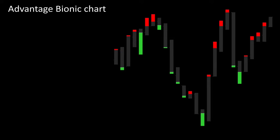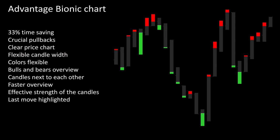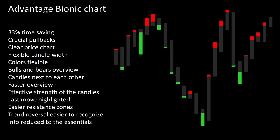Let's briefly summarize the advantages of the bionic candle again. This saves you 33% in time; the decisive pullbacks are highlighted; we have a clear price chart; the candle width and the colors can be flexibly adjusted; we have a better overview of bulls and bears; there is also a better overview if we put the candles next to one another; there is a quicker overview overall; the effective strength of the candle can be identified immediately. The last movement is highlighted, so that easier areas of resistance can be identified. Trend reversals are easier to localize; the information is reduced to the essentials; and a very decisive point is there is no change in price compared to the normal candle like for example in the Heiken Ashi, which is calculated from the last close.